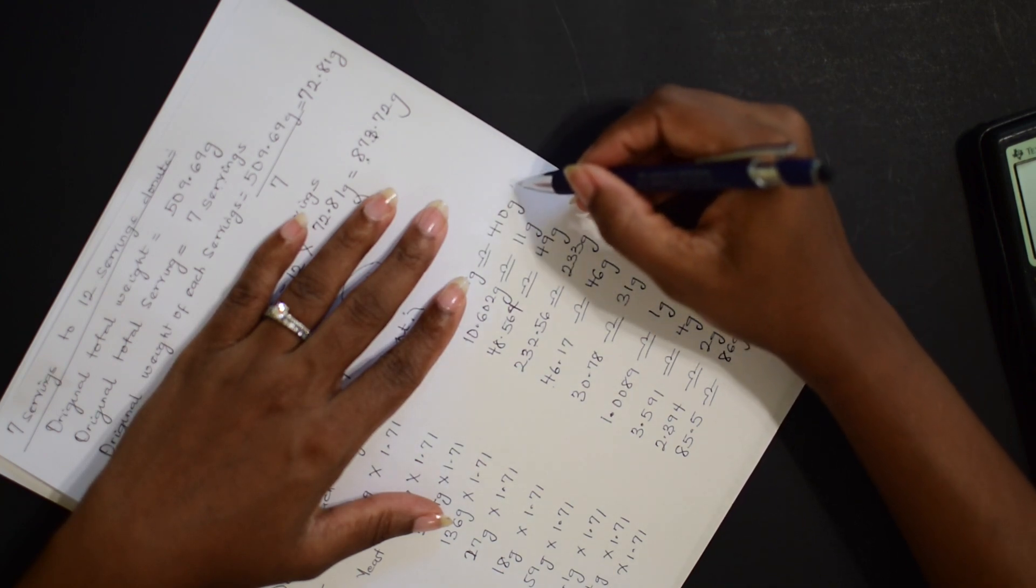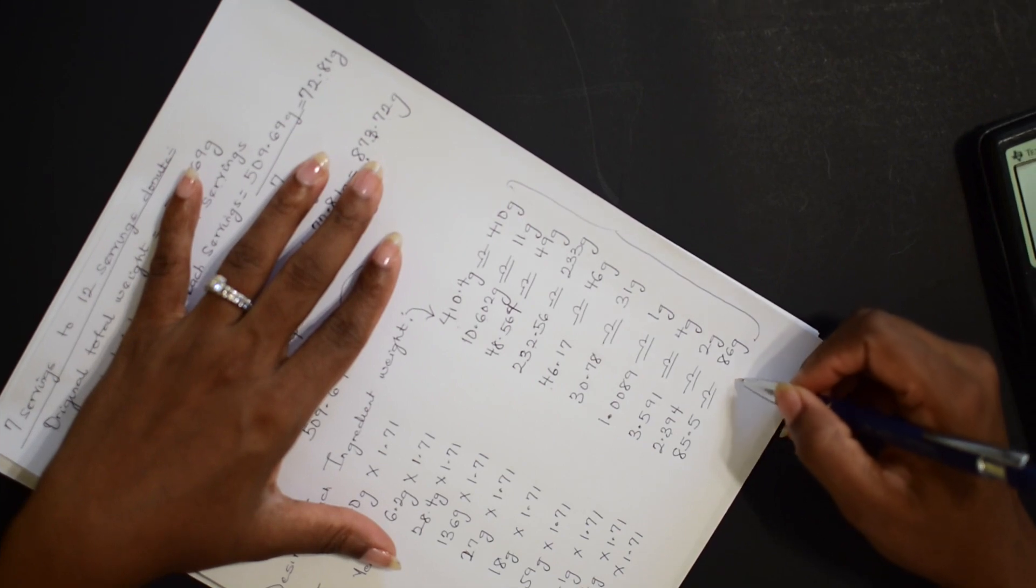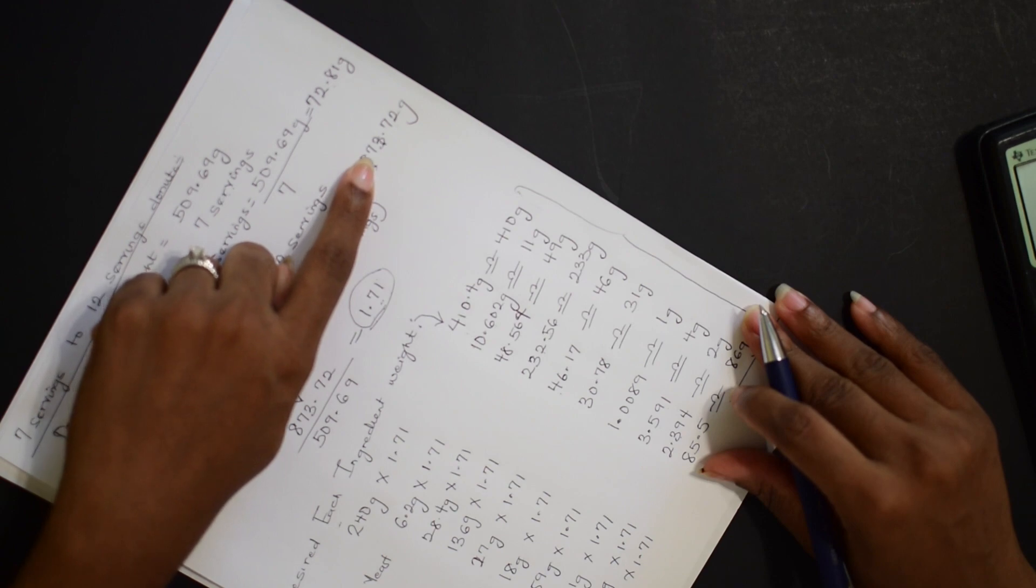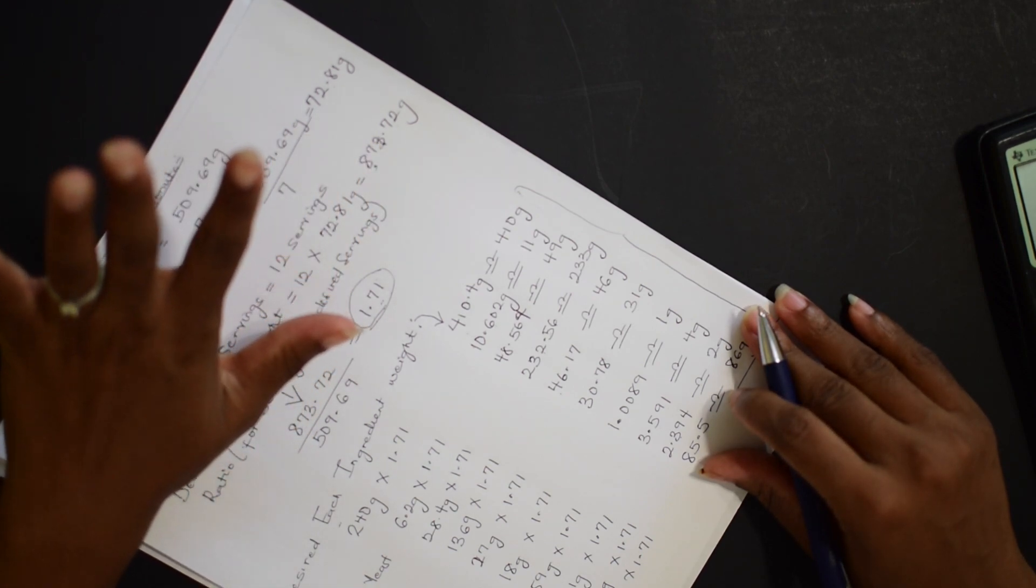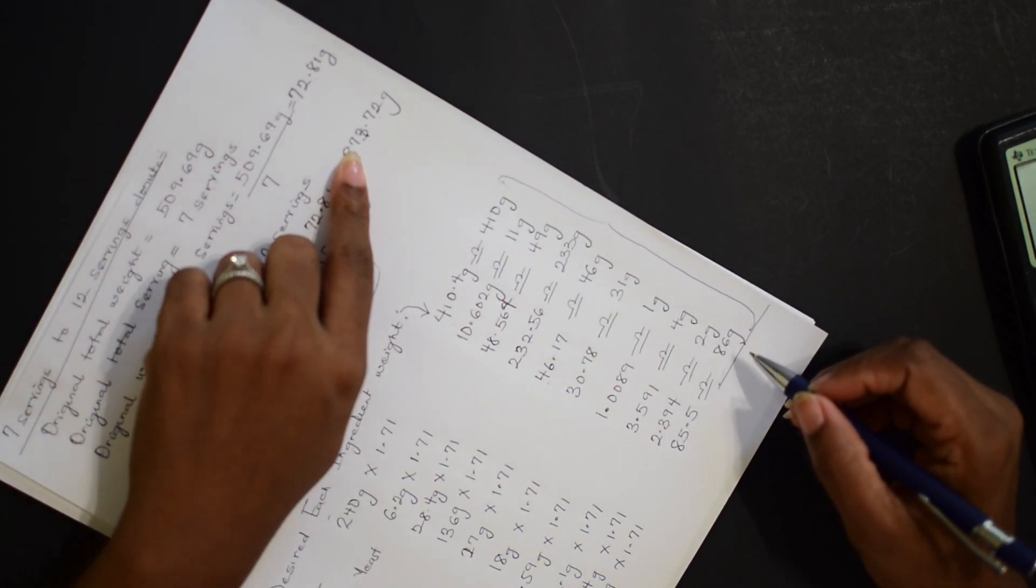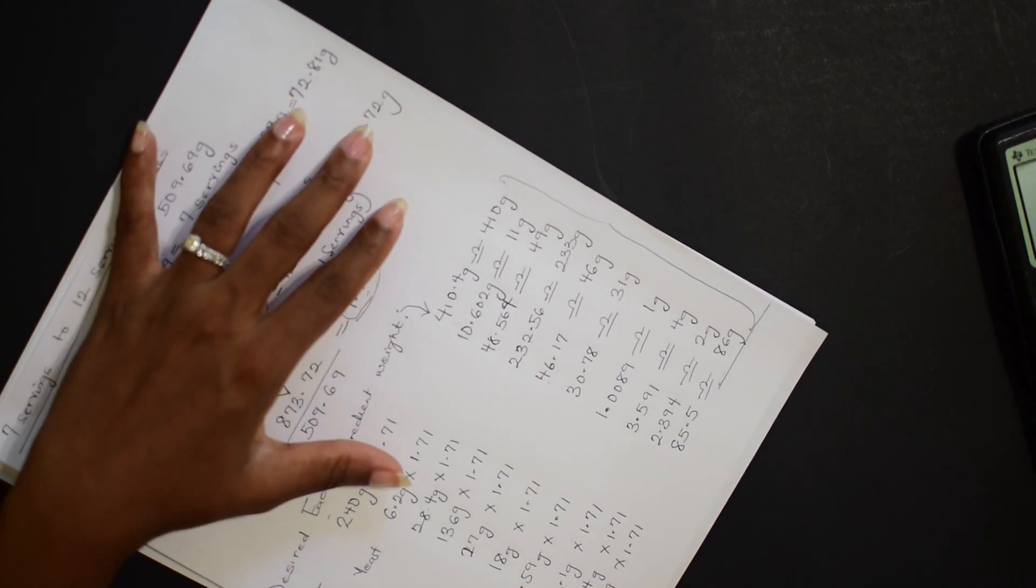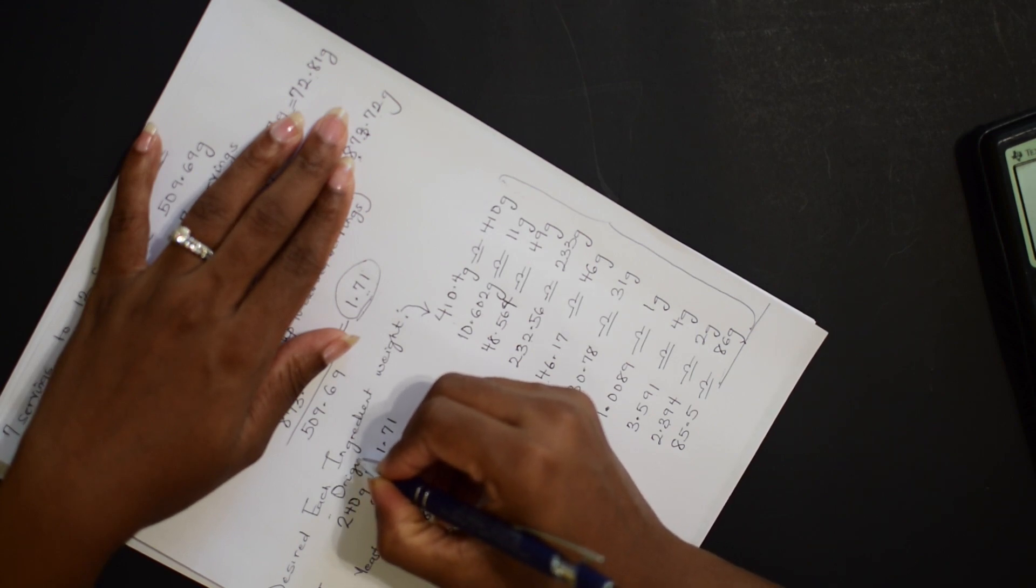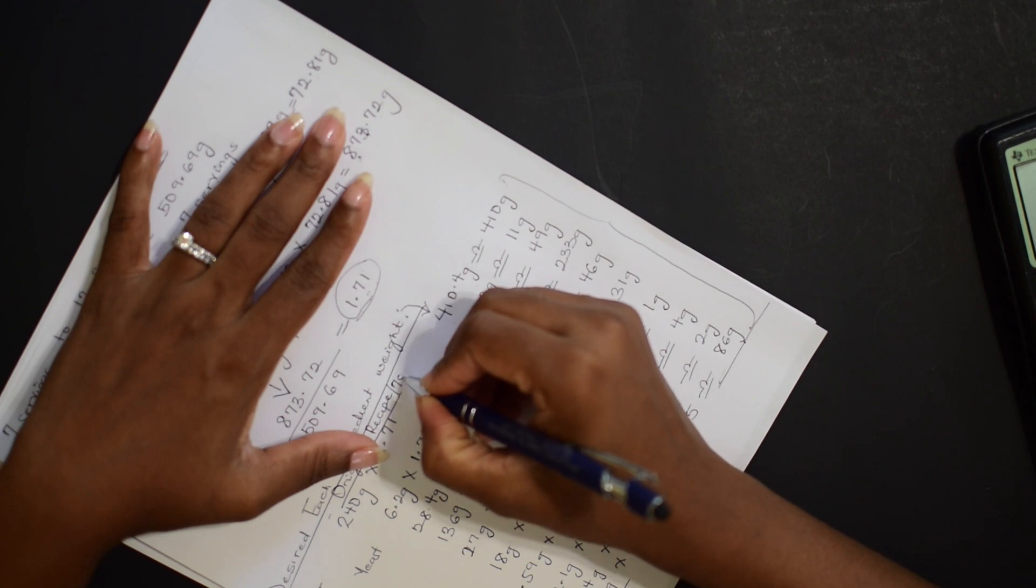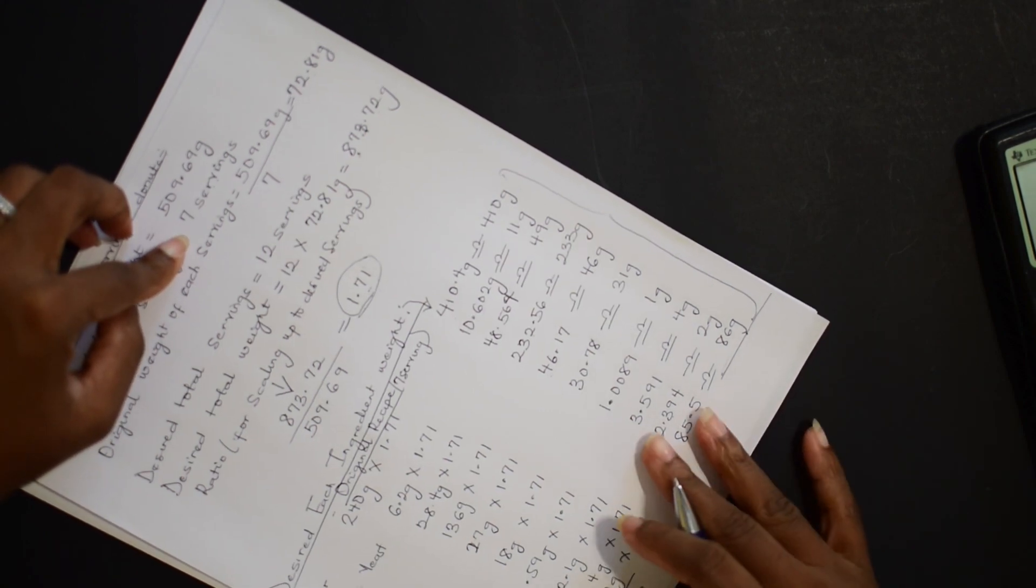So these are what you'll be needing for each of the recipe to make 12 servings of donuts. Now, just to cross check and make sure that all the sum total of this desired weight of each of the ingredients is equal to this 873.72 grams that we had mentioned before. So the next thing for us to now do is to sum up all this, and make it at least 873.72, a little above, but it should be close to this total gram. So for the total gram of this original recipe, this is the original recipe which made 7 servings. The total was 509.69 grams. That was the total.